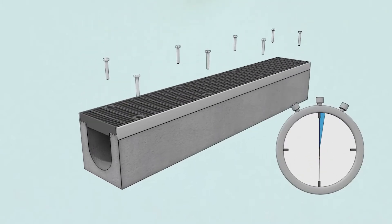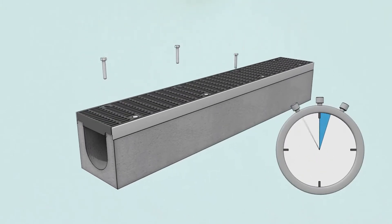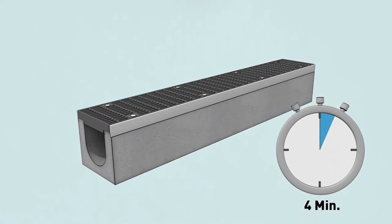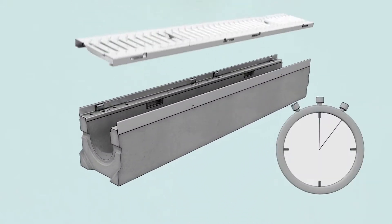The installation of one meter of conventional grating with eight bolts takes over four minutes. Installing one meter of side lock takes just about half a minute. That makes the difference.